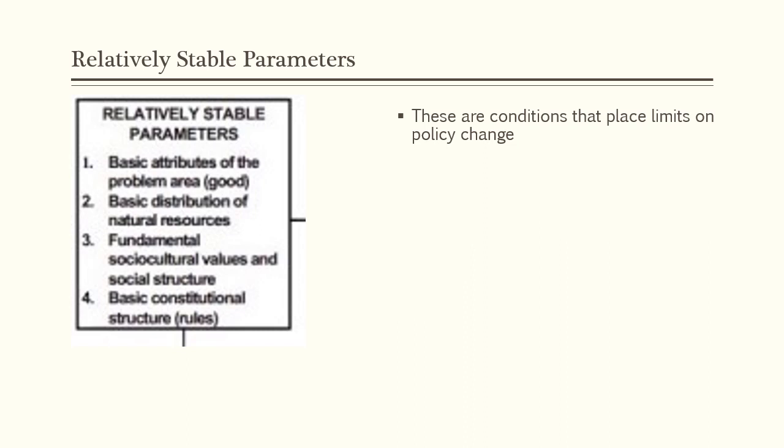Relatedly, fundamental socio-cultural values and social structure place limits on how much policy can change dramatically. With the housing issue, California has a long tradition of local control over housing policy. As you'll read in the assigned articles this week, people can get really upset when they feel the state is taking away their community's power to determine what types of housing can be built in their area. And finally, the basic constitutional structure or rules set the threshold for how much agreement has to be achieved in order to change policy. The legislative process in California includes multiple veto points, making it a pretty high bar in terms of agreement in order to enact policy change.